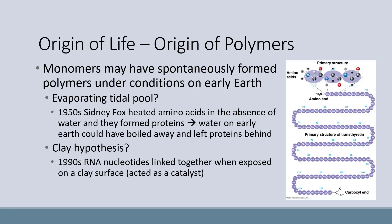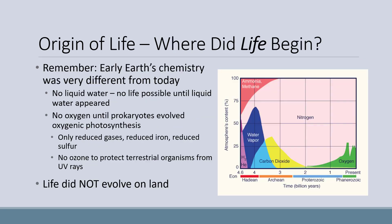So there are several options, and we aren't 100% sure how larger proteins first formed. We've been talking about amino acids, proteins, and polymers, but that isn't life yet. So where do we think life evolved? Early Earth's chemistry was very different — for a long time there was no liquid water, and no life was possible until liquid water appeared. There was also no oxygen until prokaryotes evolved oxygenic photosynthesis. There were only reduced gases, reduced iron, reduced sulfur, and so on.